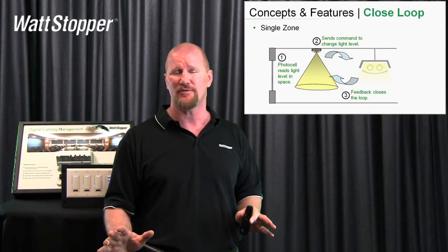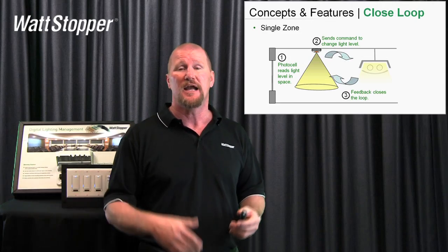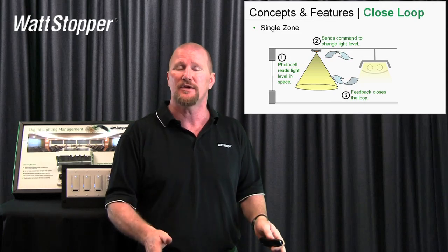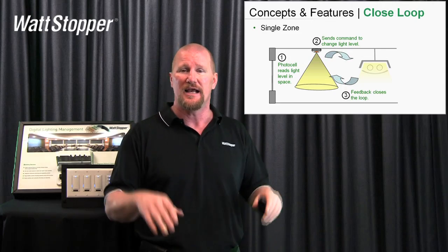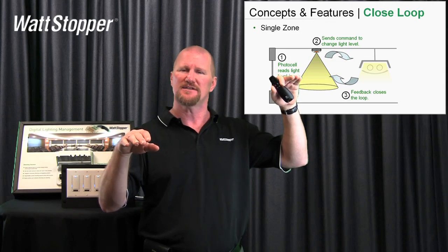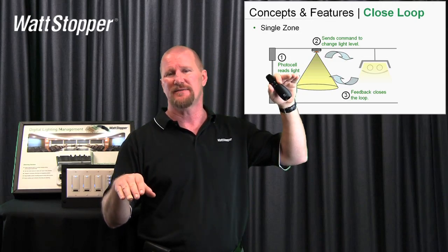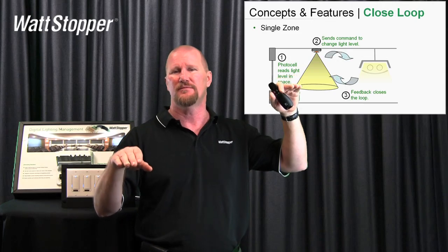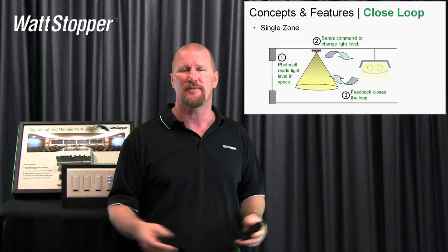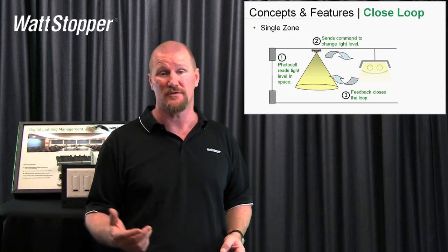Closed loop is really good for single zone applications, but not so great for multi-zone applications. The reason is that since the photo sensor is taking into account all the light that's entering, as zone one moves up, the photo sensor sees it and says there's a lot of light — maybe it should reduce zone two. Then it might say there doesn't seem to be enough light and ramp up. So you can get a sort of battle of trying to set the level, which is why we really recommend open loop for multi-zones.